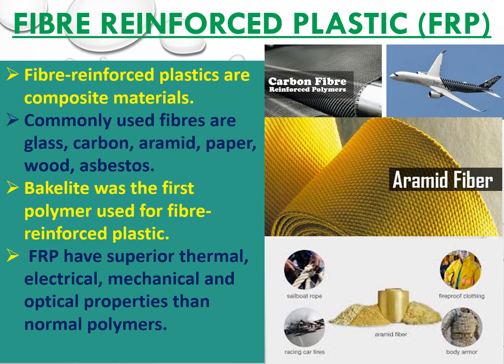Commonly used fibers are glass, carbon, aramid, paper, wood, and asbestos. This is essentially compounding of plastic — when you add additional materials to a polymer, it enhances thermal, aesthetic, optical, and mechanical properties. So fiber reinforcement is nothing but a compounding of plastic.